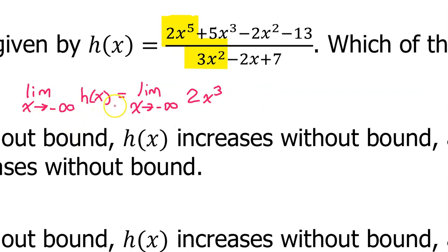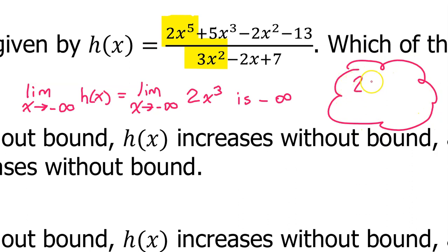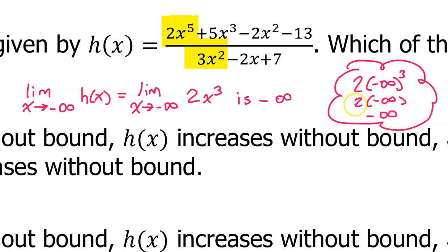Similarly, the left end behavior of h is the limit as x approaches negative infinity of 2x to the third power, which is negative infinity. You can think of it as 2 times negative infinity to the third power — since raising a negative number to an odd power keeps it negative, and cubing infinity is still infinity, 2 times negative infinity is negative infinity. Note: this reasoning belongs only in a thought bubble — it is not proper notation and should never be written on a test, since infinity is not a number and cannot be cubed or multiplied.